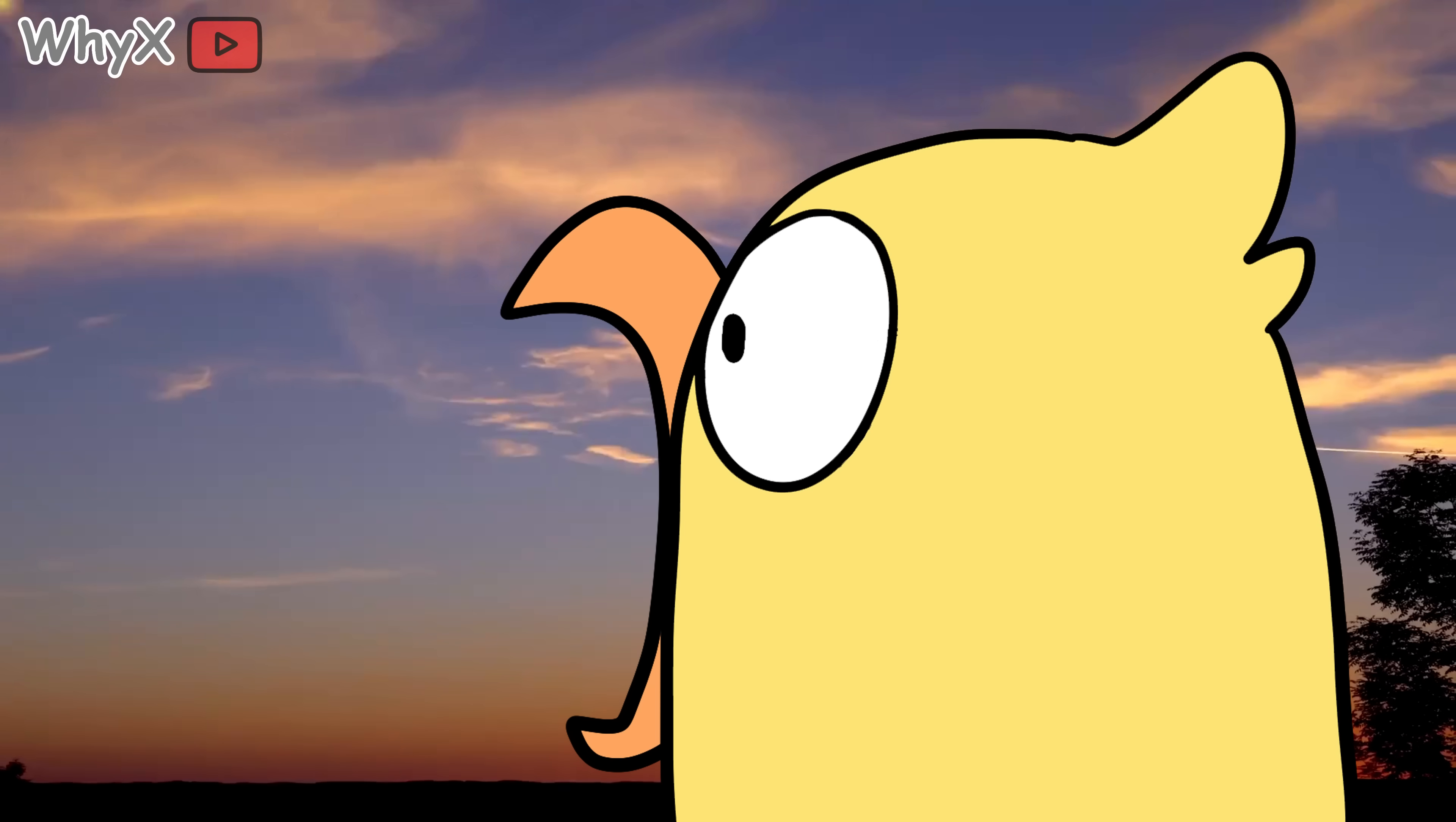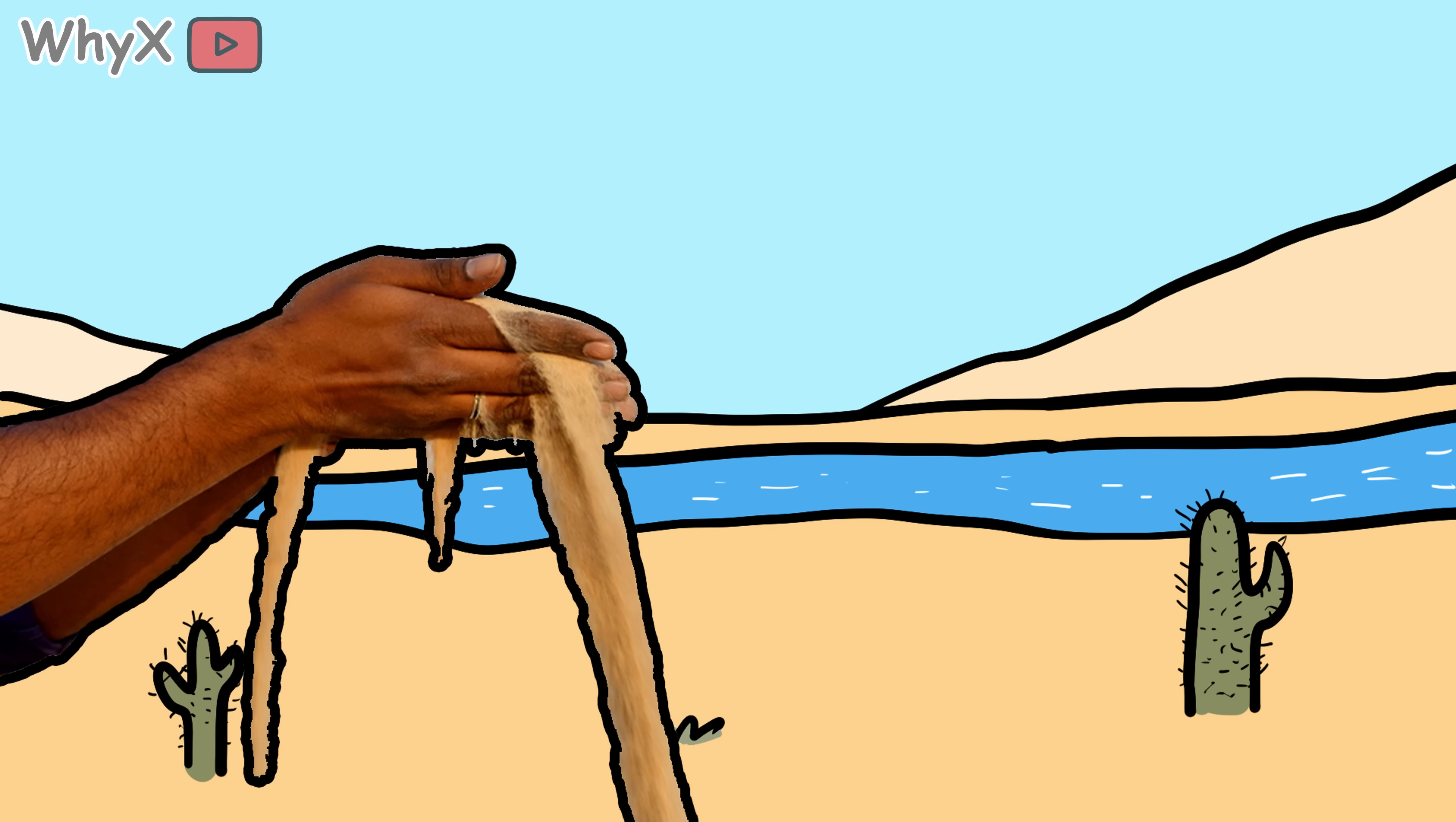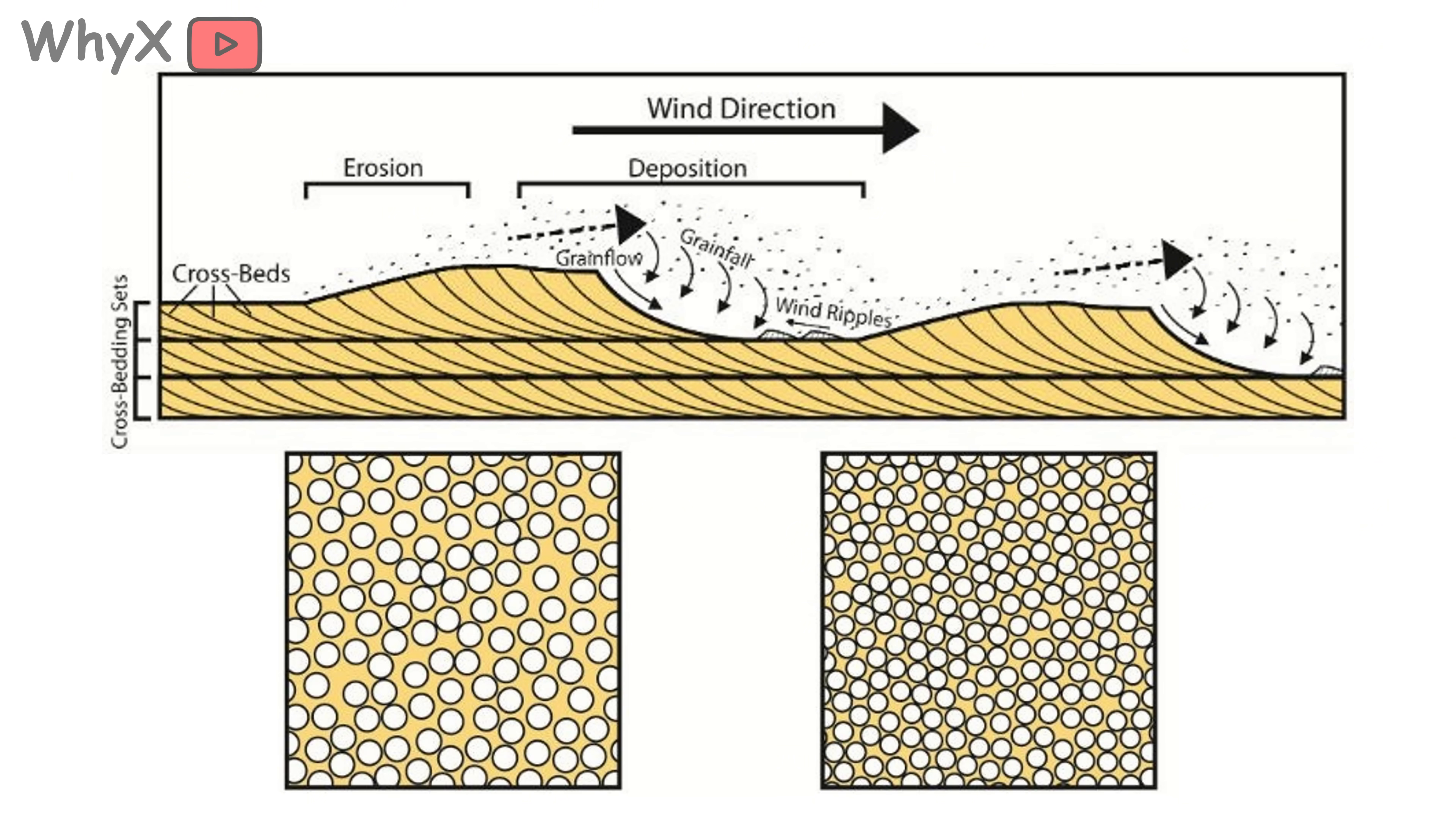First things first, when we say sand, we do not mean just anything grainy and beige. Sand is not one uniform thing. There are many types of sand, and most of them are not useful at all. Take desert sand, for example. It looks cool, but it is practically useless for construction. Why? Because it is too round and smooth. It has been worn down by wind for thousands of years, making the grains so polished that they do not stick well together.